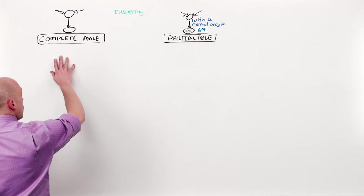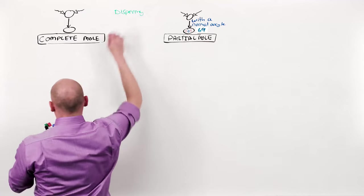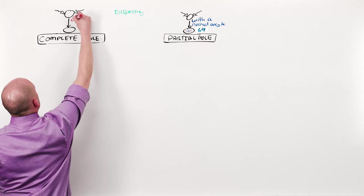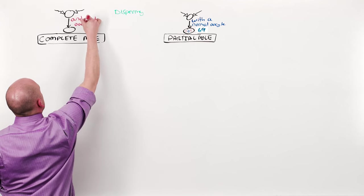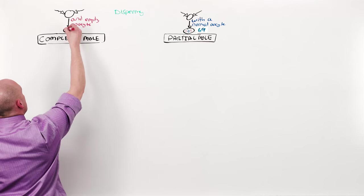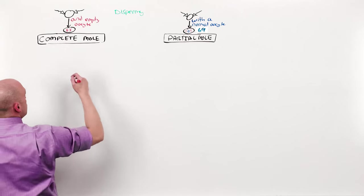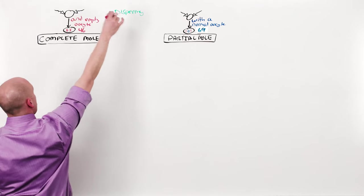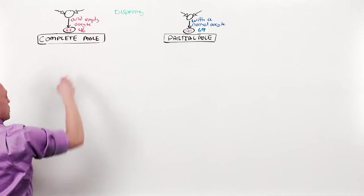Whereas a complete mole is the product of two failures of fertilization, both dispermy and an empty ovum. Which means there's only going to be two sets of DNA. But they're both spermal. So there's a normal number. However, because there are two failures of fertilization, both dispermy and an empty oocyte, complete mole is going to be worse.